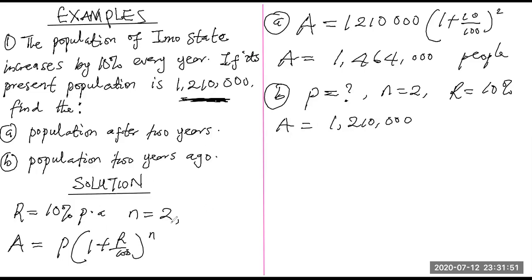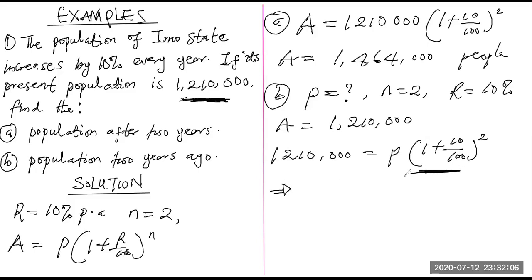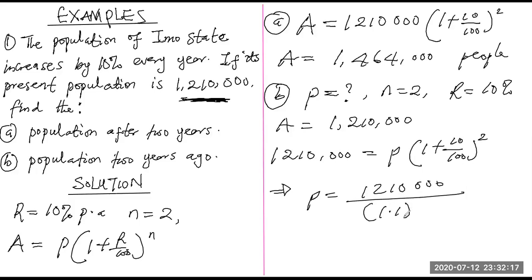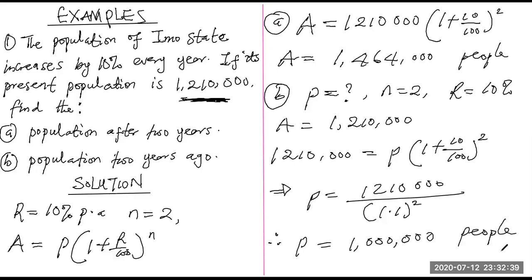Solving for P: P = 1,210,000 ÷ (1.1)^2. Using a calculator, P equals 1,000,000. So two years ago, the population of Imo State was one million people.